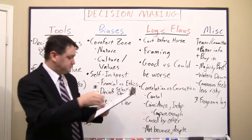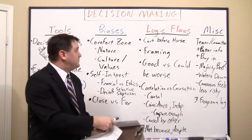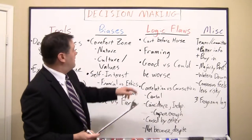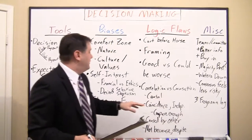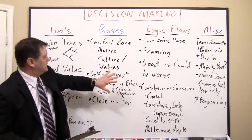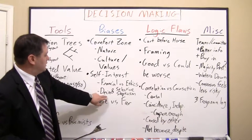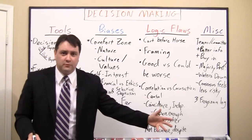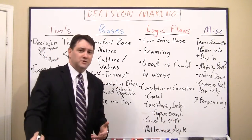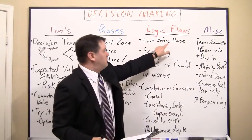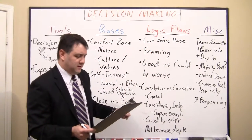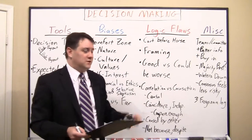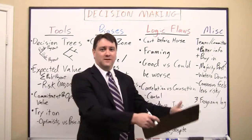Now let's move on to some traps — or more formally, logic flaws. One of them is putting the cart before the horse. This flows from the bias discussion around desire: we want something luxurious so we look for reasons to buy it and diminish reasons not to. What we've actually done is decided to buy something and then selected the facts to support that purchase decision. We didn't actually look at the facts and then decide whether or not to buy.